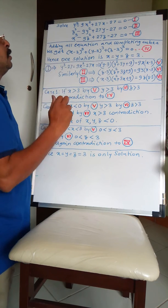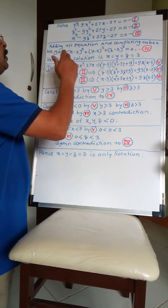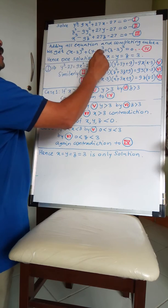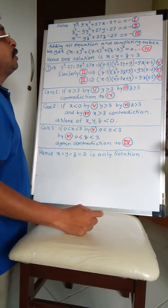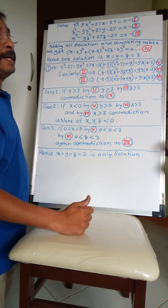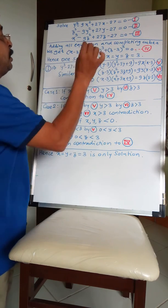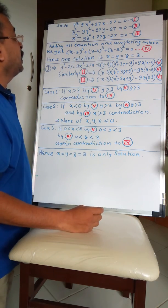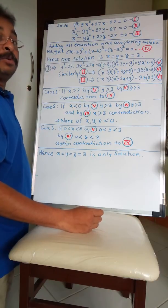We add all three equations to get complete cubes: (x - 3)³ + (y - 3)³ + (z - 3)³ = 0. By looking at this equation, we realize that x = y = z = 3 is definitely a solution.